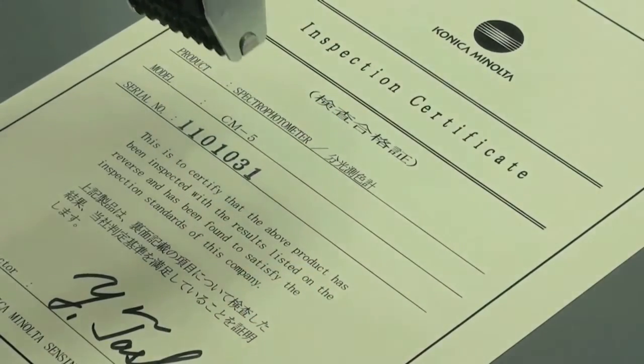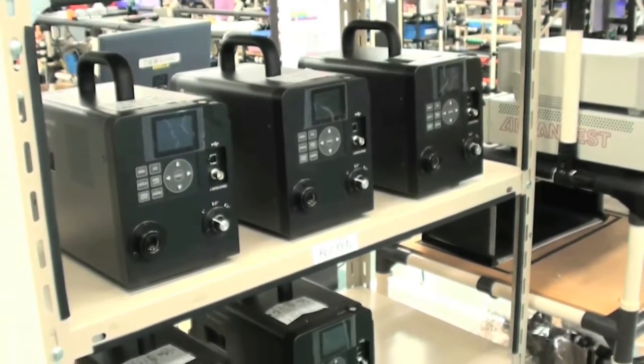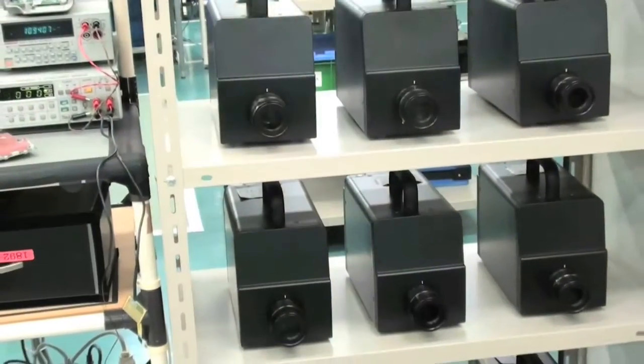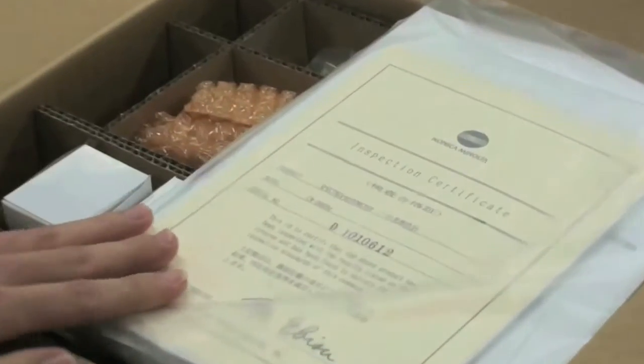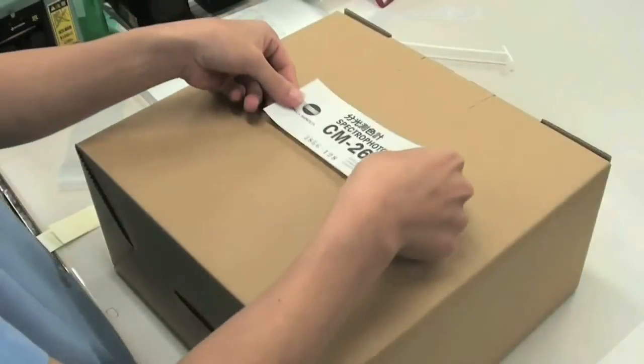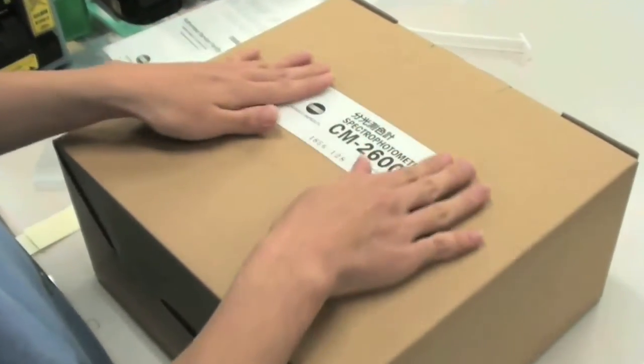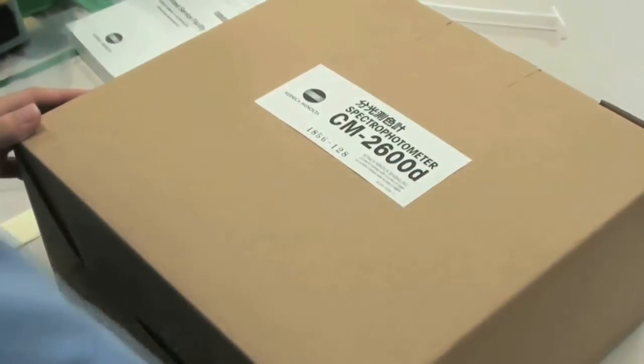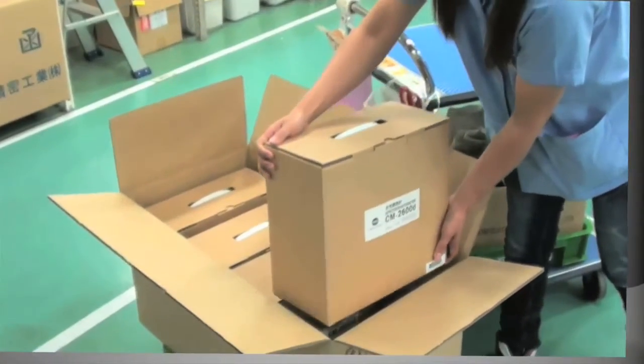We bring all the hand-crafted care we put into manufacturing our products, and carry that right through to our shipping procedures. As you can see, our CM2600D portable spectrophotometer is packaged first in an individual box before being placed into a master carton.